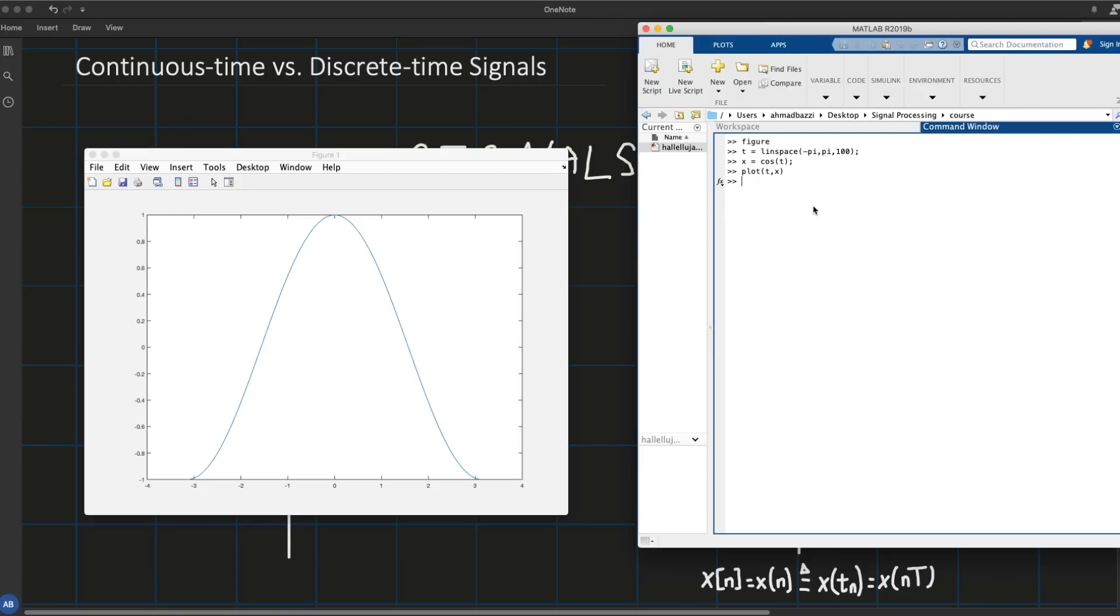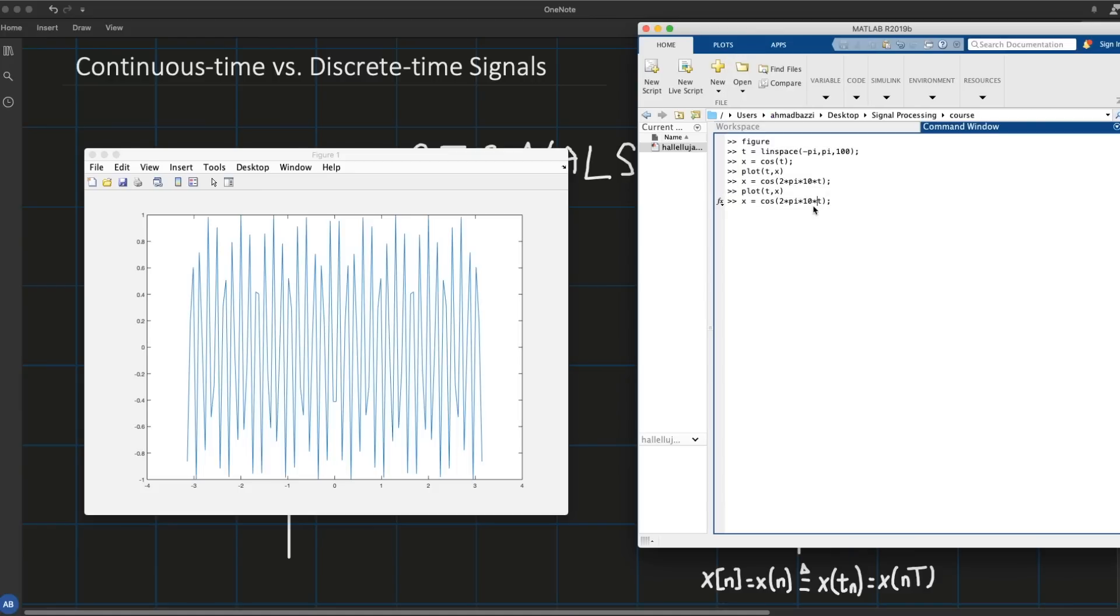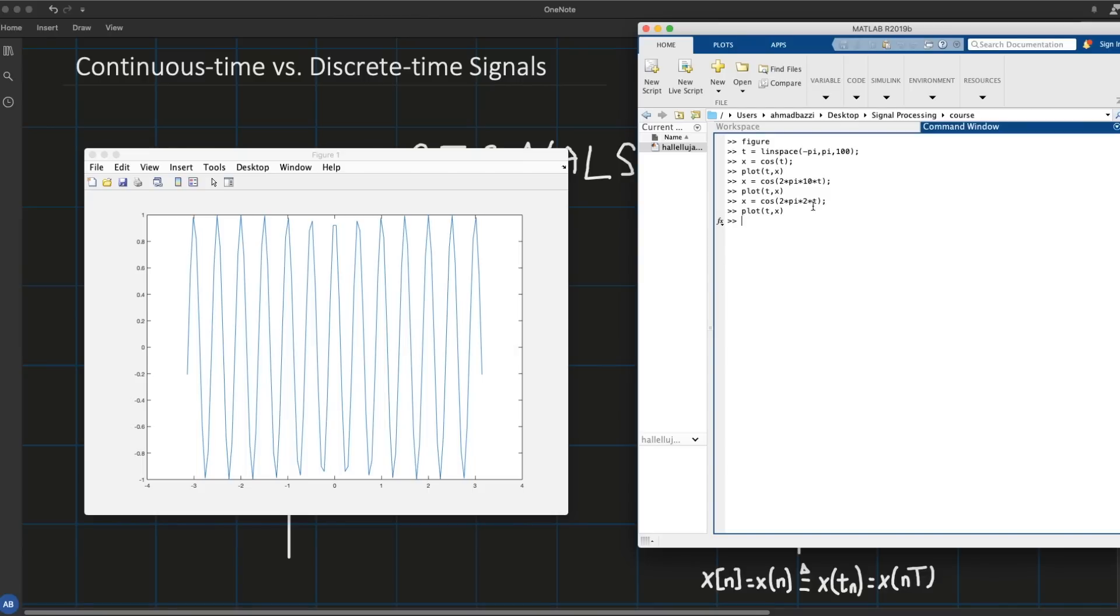And this is what you get. If you want the cosine x to go faster, that is at a higher frequency, all you have to do is just 2 pi, let's say 10 of t, go ahead and plot it. And there you go, doesn't look that good because my sampling period is not low enough. So let me pick another frequency, plot it, looks better.